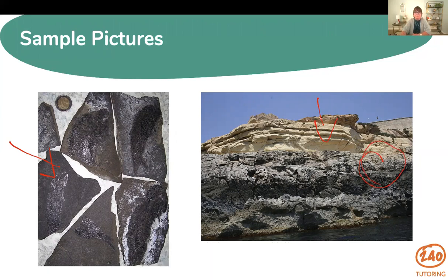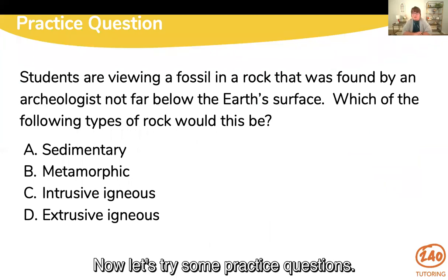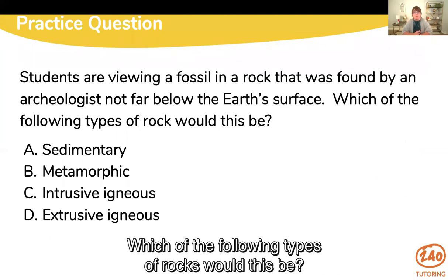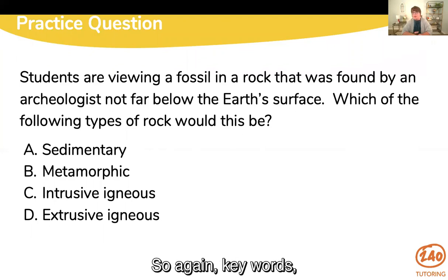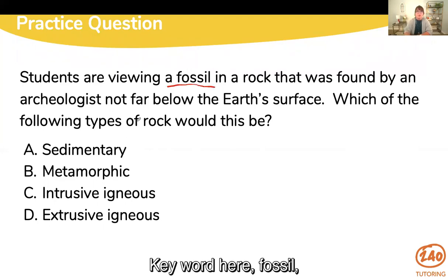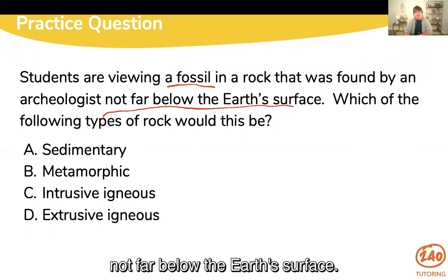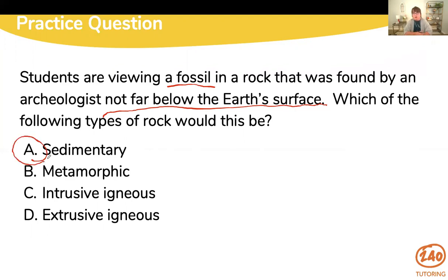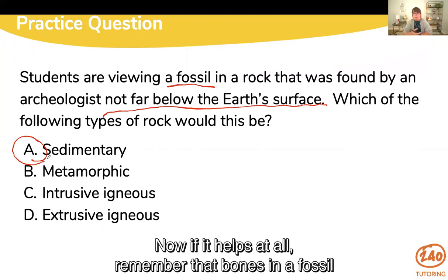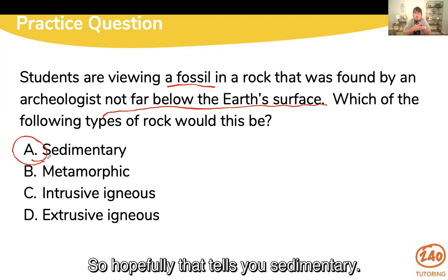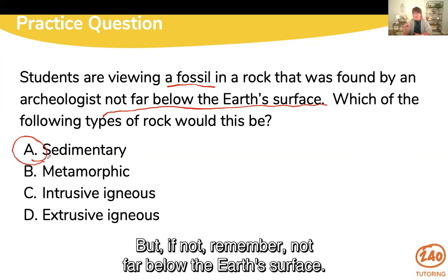Now let's try some practice questions. Students are viewing a fossil in a rock found by an archaeologist not far below the earth's surface. Which of the following types of rocks would this be? Look for those keywords — fossil and not far below the earth's surface. That should tell you it's a sedimentary rock. Remember that bones in a fossil would have to be cemented within something else, pressed together — that's sedimentary. And not far below the earth's surface confirms it.